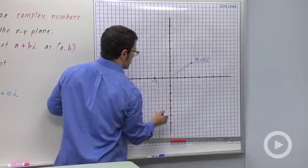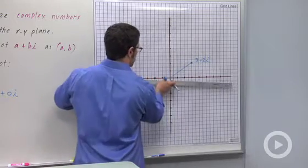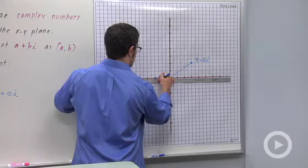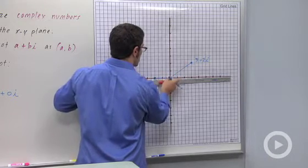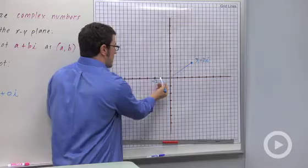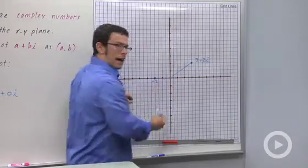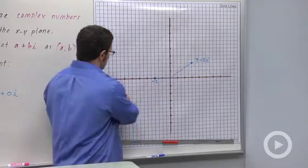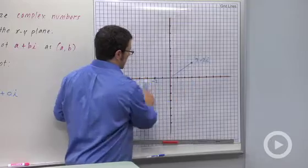I'll just write negative 2. And I can also connect it to the origin. So it's important to note that numbers that are right on the horizontal axis are real numbers. And this is therefore called the real axis.